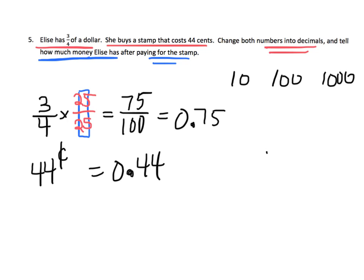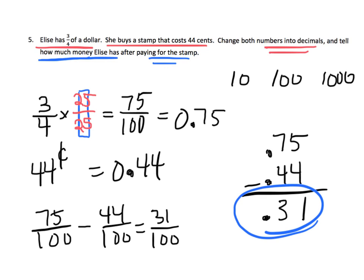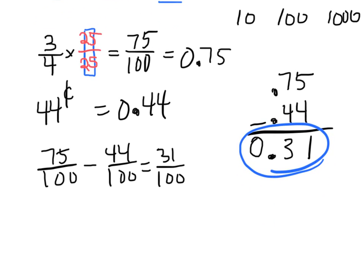Now we figure out how much money she has after paying for the stamp. 75 hundredths minus 44 hundredths gives us 31 hundredths. We could also do this as fractions: 75 hundredths minus 44 hundredths equals 31 hundredths, which equals 0.31. So she has 31 cents left over, or 0.31 dollars.